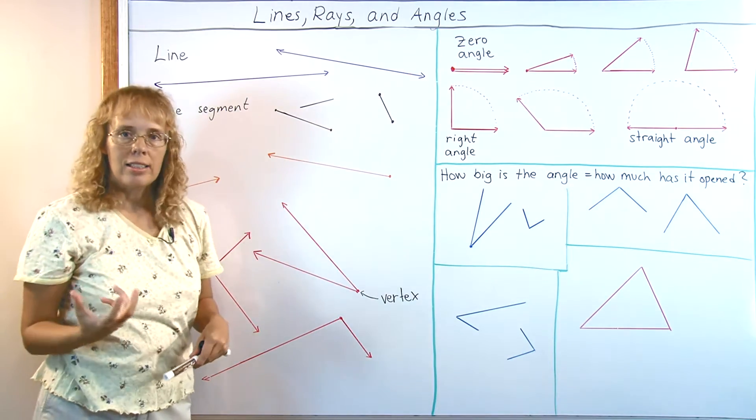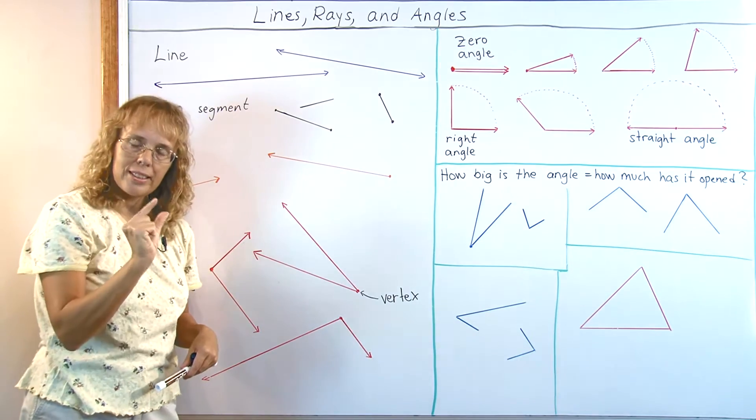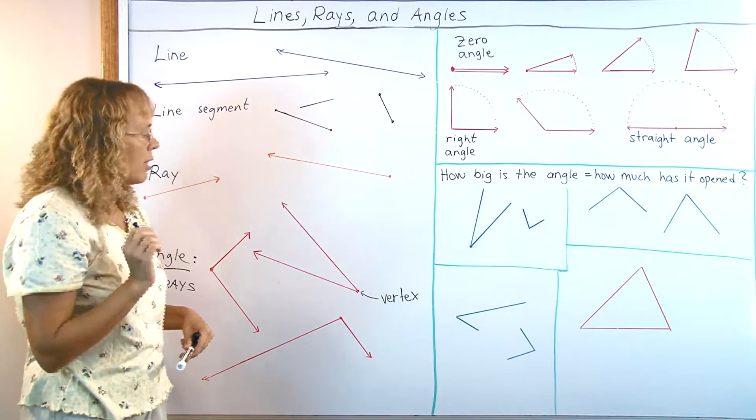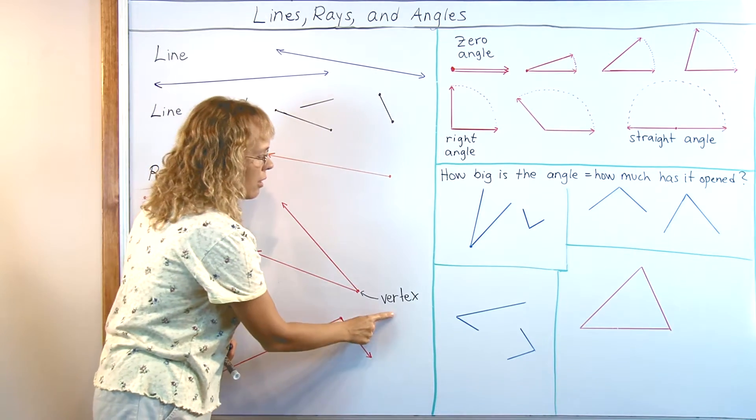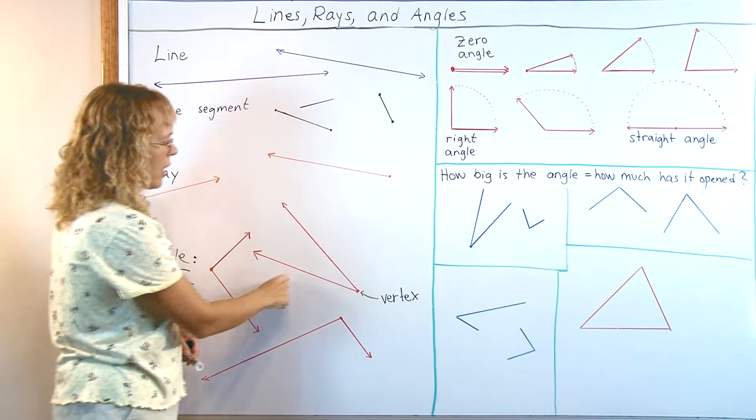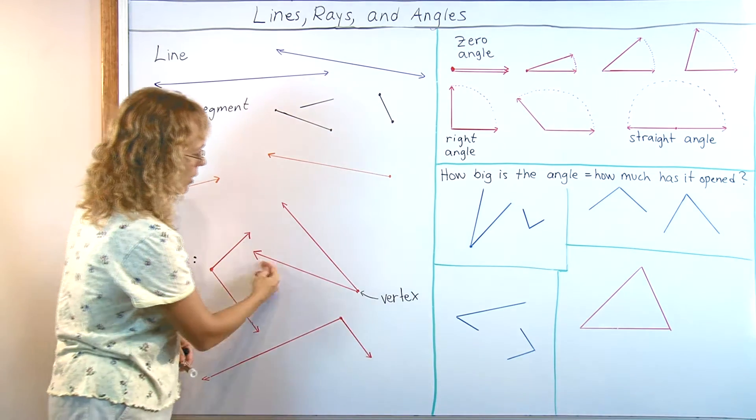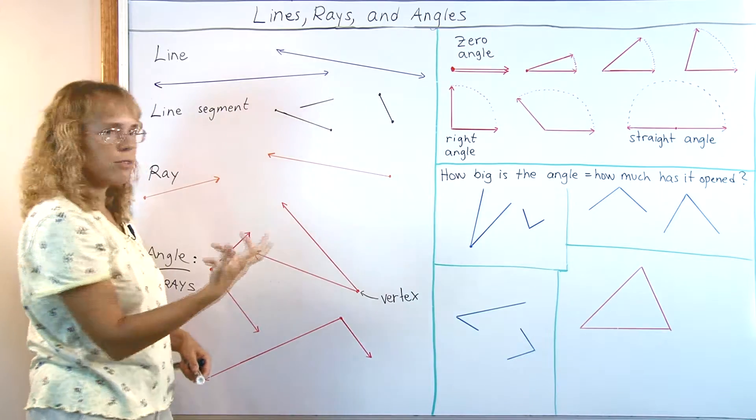And an angle consists of two rays that have the same starting point. That starting point is called the vertex of the angle, and the rays are often called the sides of an angle. So here is an angle. The two rays together form an angle.